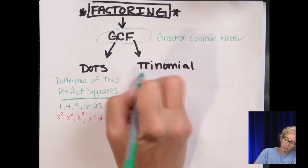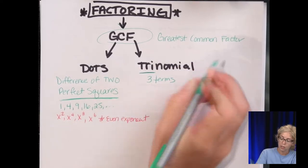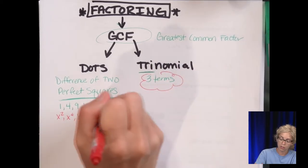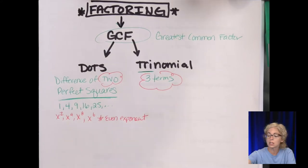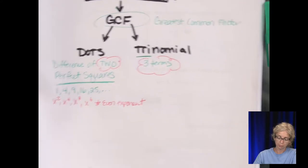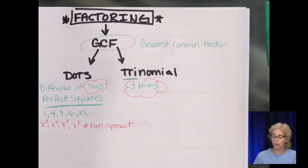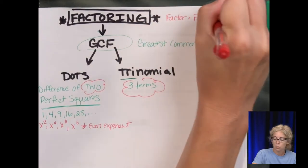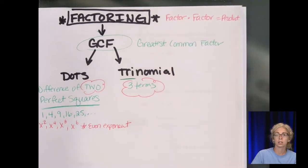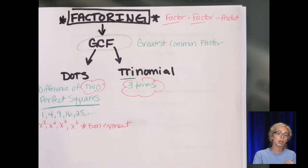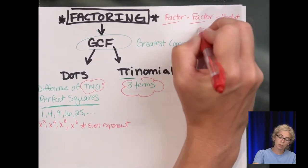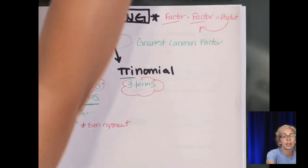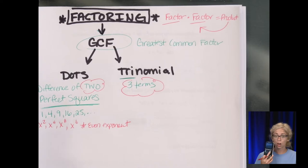Trinomial factoring means you're going to have three terms, while DOTS has two terms. An important vocabulary point: factoring means a factor times a factor gives you a product. We're given the product and we have to work backwards to determine what was multiplied. Your calculator will be very handy to check.